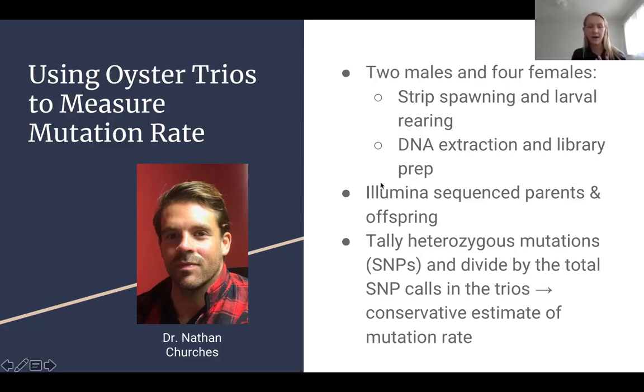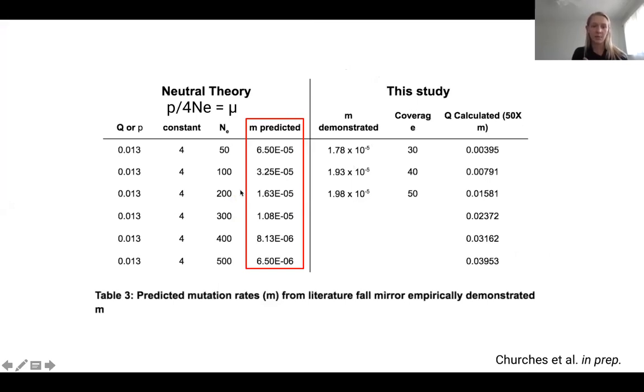What he found is that in comparison to these expected mutation rates given the neutral theory here, they actually mirrored them almost perfectly. This is a really big deal because this mutation rate for the first time has been empirically measured and it is massive as compared to humans and other eukaryotes that usually sit approximately around 10 to the minus 8, 10 to the minus 9. This is a really novel idea in a lot of eukaryotes.